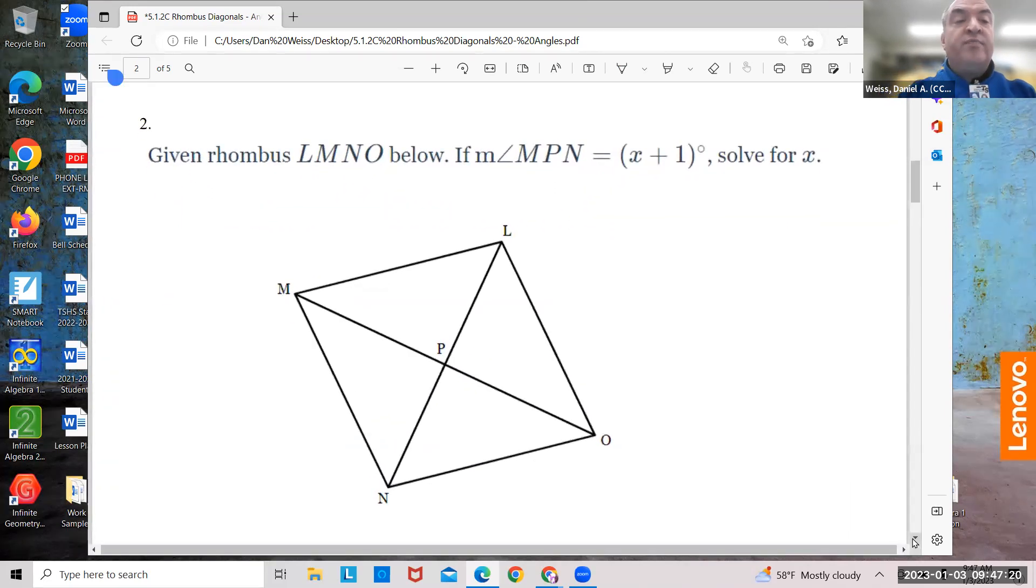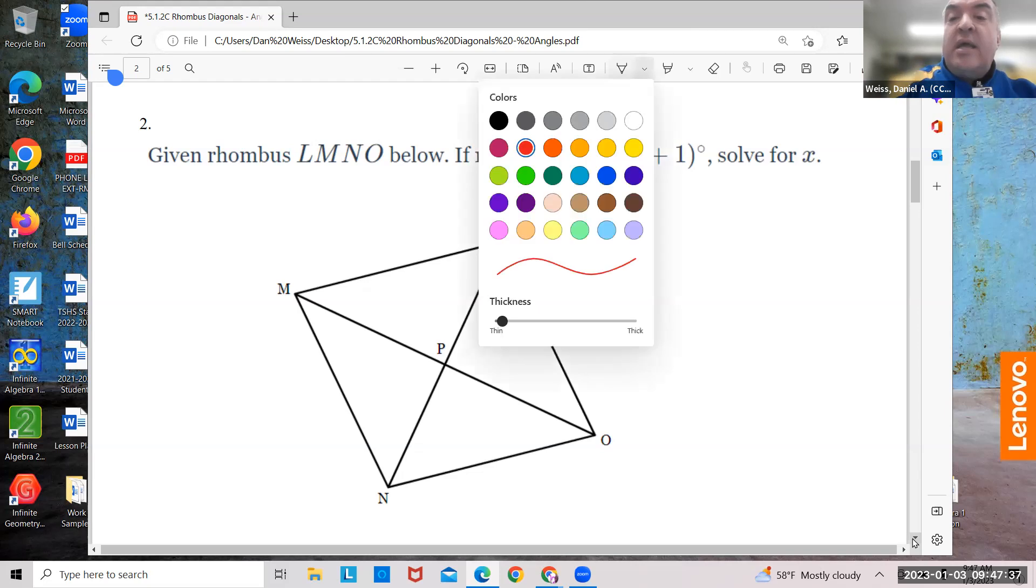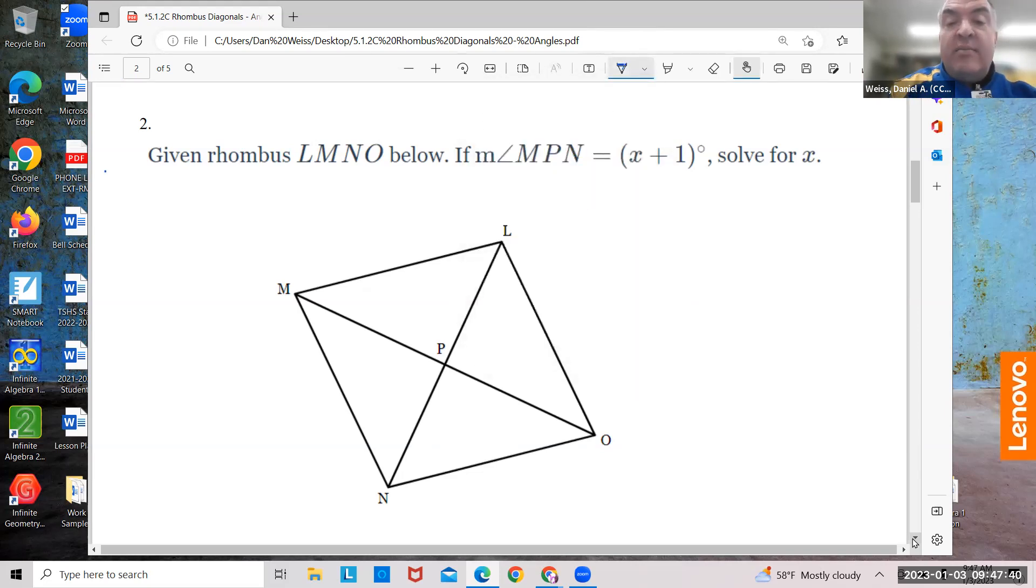Rhombus LMNO. Remember, in any polygon, to name it, you just name all of the outside angles and you go in order. It doesn't matter whether you're going right or left. But notice how rhombus LMNO just starts with L and then it goes M, N, O in order. It could have been L, O, N, M. That works, too. But we're calling this one LMNO.